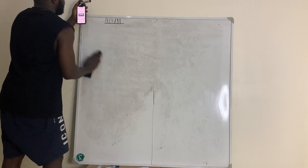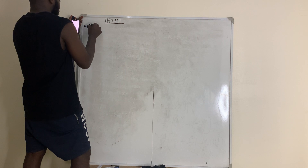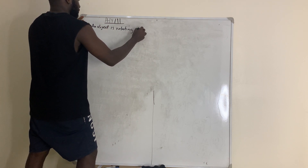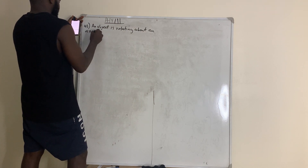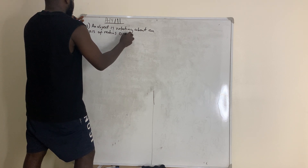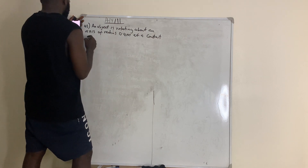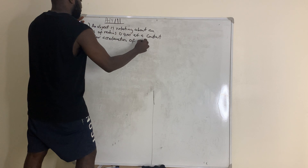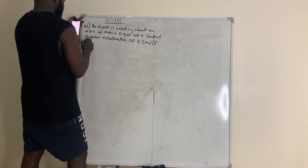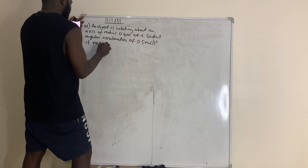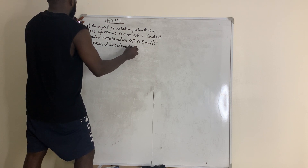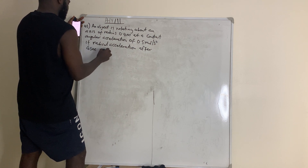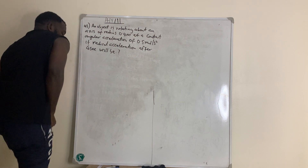These things are very simple. Question number 43 says: an object is rotating about an axis of radius 0.4 meters at a constant angular acceleration of 0.5 rad per second squared. What will the radial acceleration be after four seconds?